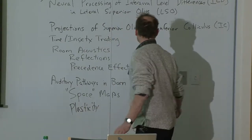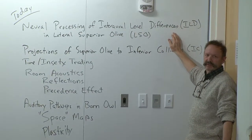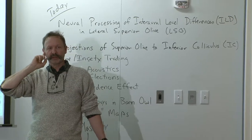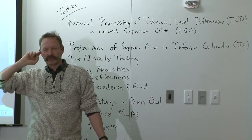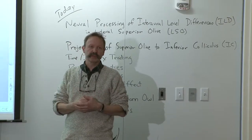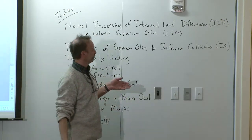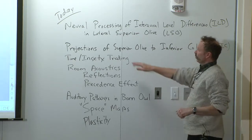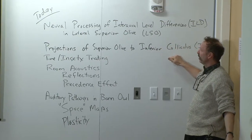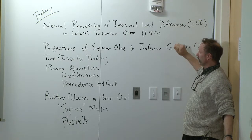Today I want to march into new things. We're going to talk about neural processing of interaural level differences. If a sound is off to one side of my head, it will appear at a higher sound level in the ear facing the sound source. For high frequencies, the ILD can be maximally 20 dB. Those are processed, at least starting, in the lateral superior olive, which is another nucleus in the superior olivary complex close to the medial superior olive. We'll talk about the processing in the LSO.